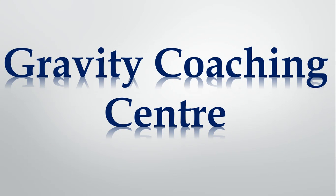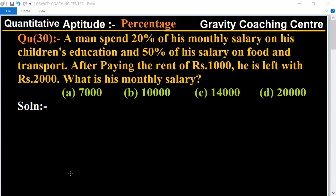Welcome to our channel, Gravity Coaching Centre. Quantitative aptitude, chapter percentage, question number 30. A man spent 20% of his salary on his children's education and 50% of his salary on food and transport. After paying the rent of Rs. 1000...